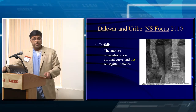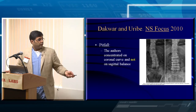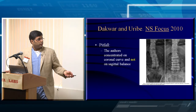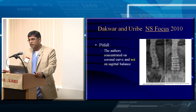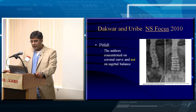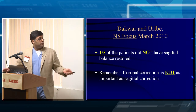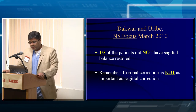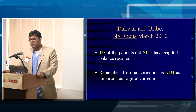An article from Uribe's group in Tampa showed they were very good at correcting the coronal curve but not good at correcting the sagittal plane. What you want to focus on is the SVA, trying to get it back to normal and matching lumbar lordosis to pelvic incidence. One-third of patients in their series did not have sagittal balance restored. The coronal correction is not as important as the sagittal correction.